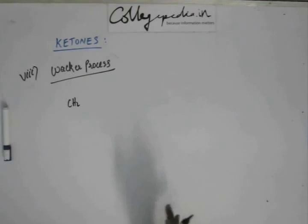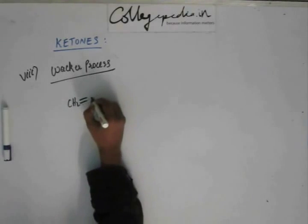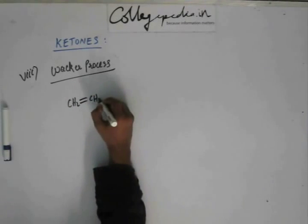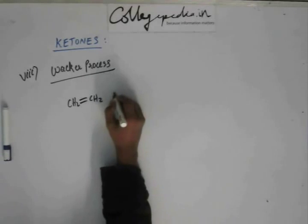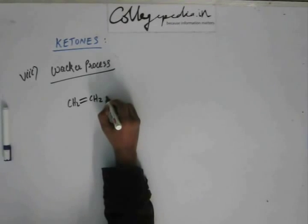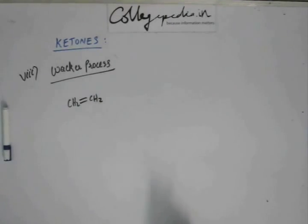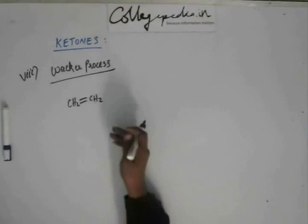Basically this reaction will produce acetaldehyde, and that acetaldehyde will be very quickly oxidized to give us acetic acid. Acetic acid is an important chemical reagent used to make many other products. So in the quest to produce acetic acid, they discovered this reaction, but later this reaction was used for all other alkynes.